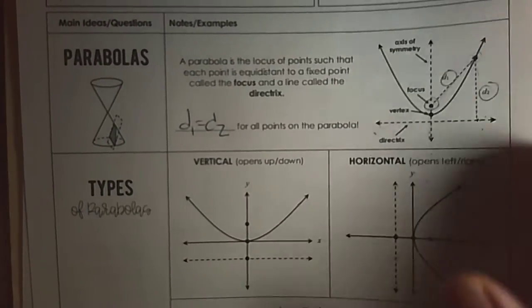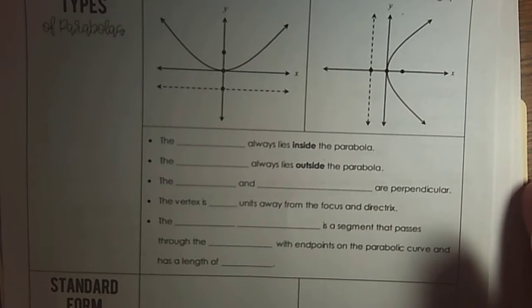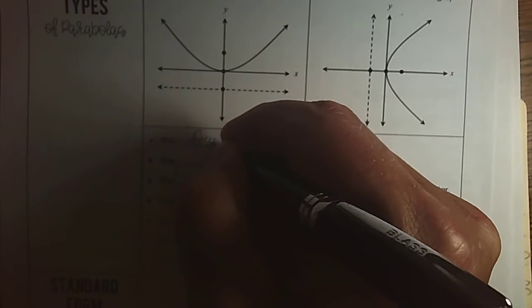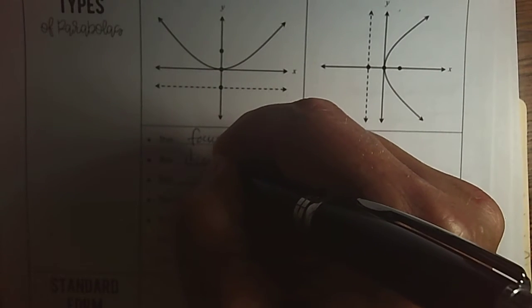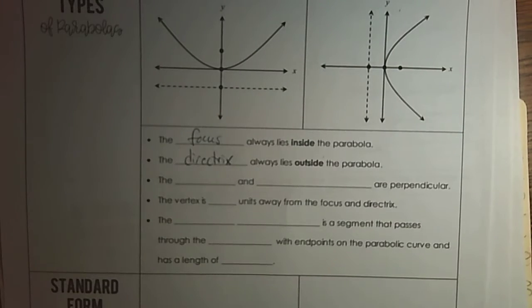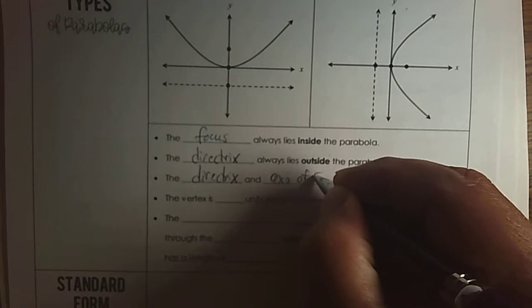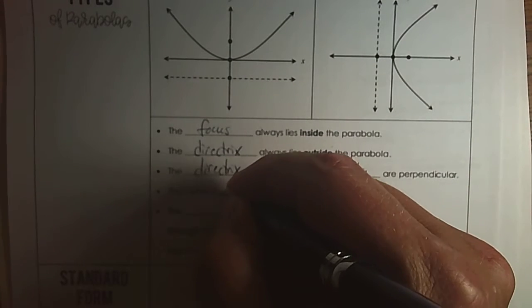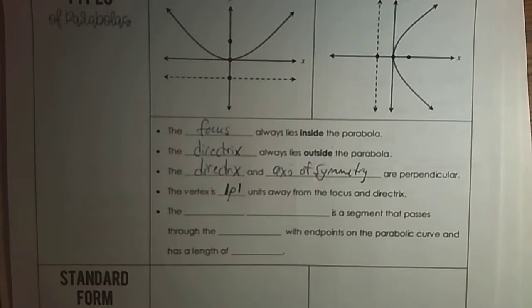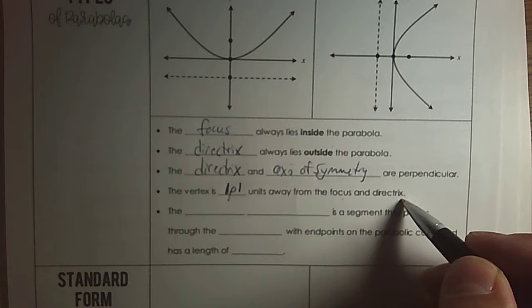There are two types of parabolas — they'll either open up or down, or open left or right. The focus always lies inside the parabola. The directrix is a line outside the parabola. The directrix and the axis of symmetry are perpendicular. We're going to use the value of P: whatever that value is, that's how many units away the focus and directrix are from the vertex, both in positive and negative directions.